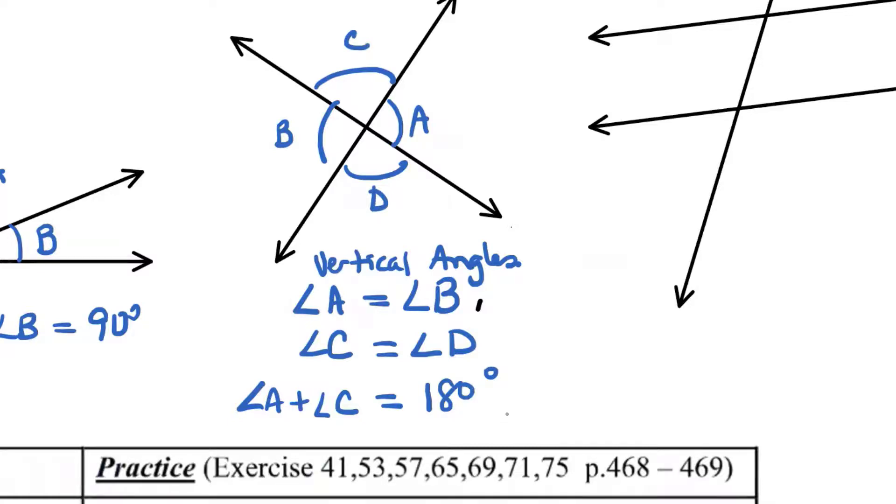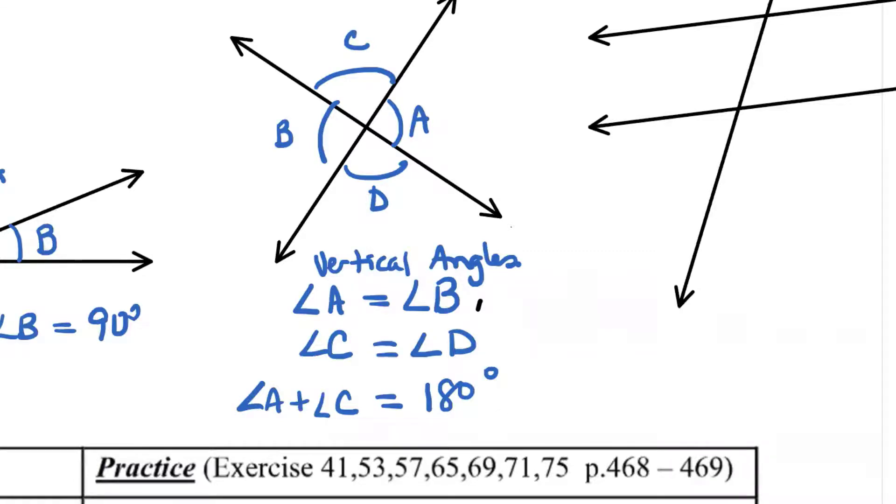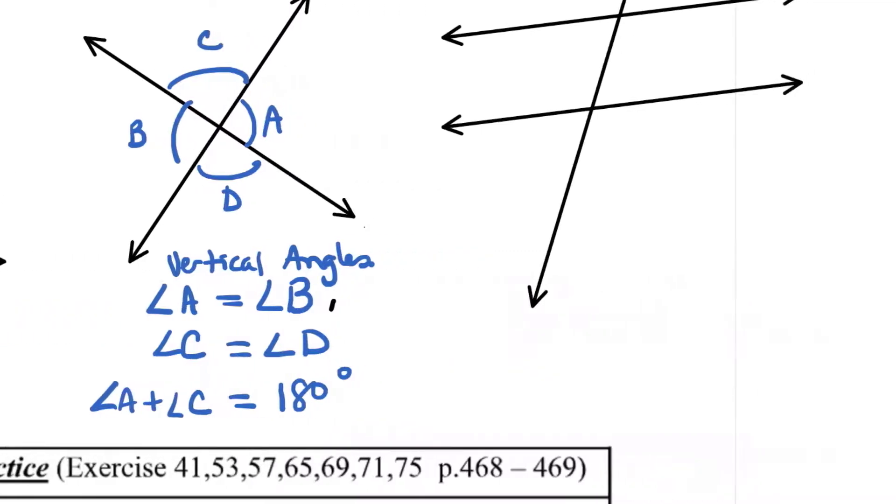What are two other angles we could add up and get 180? B and D, B and C, A and D, right? So that is something you could use as well. So there are not only vertical angles, but also straight angles in there.